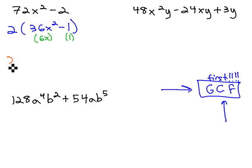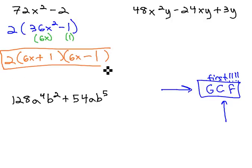As we factor, we keep the GCF out front, and then it's going to factor to the sum and difference of those square roots, 6x plus 1 and 6x minus 1, to complete our problem.